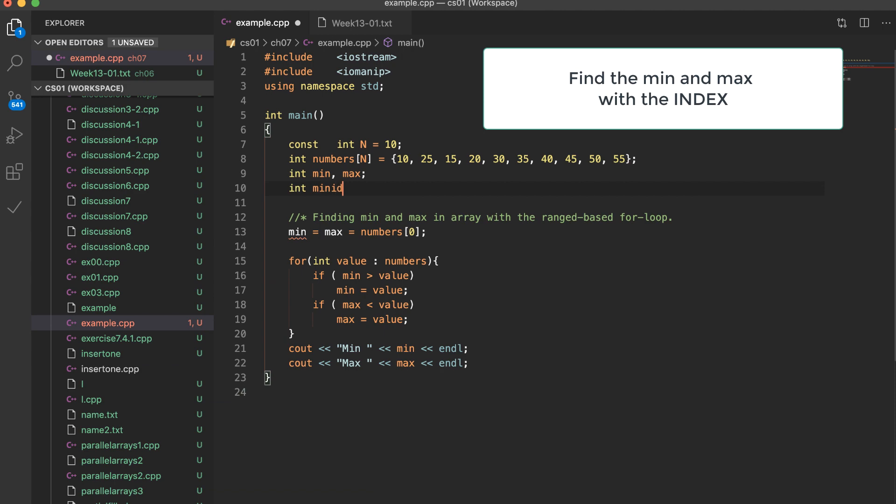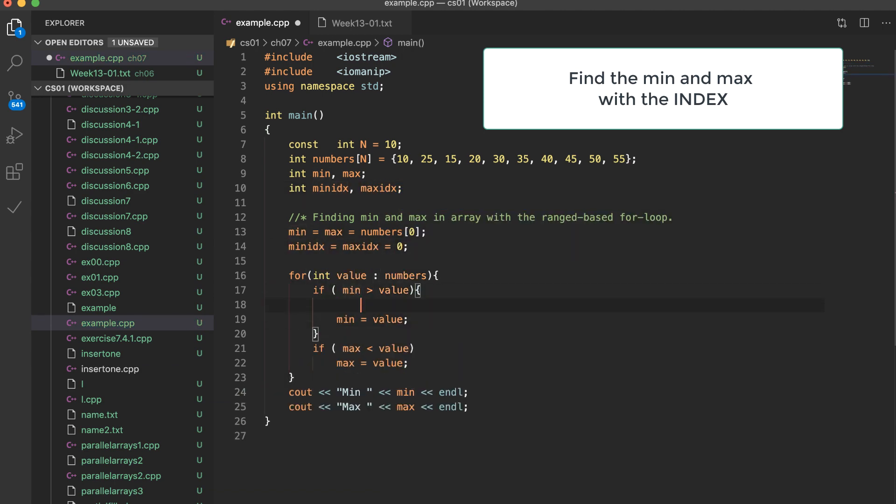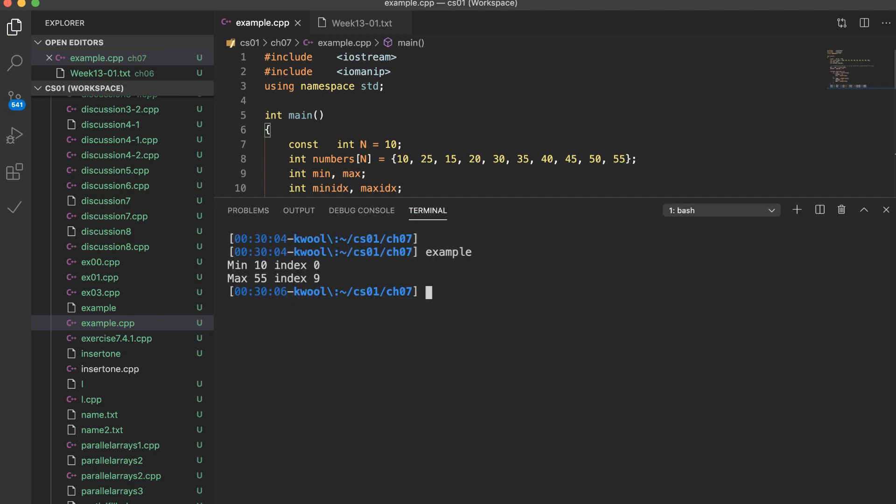I will declare two more variables for the index. Two variables are initialized as 0 for the first index. And when we change the min value, we also change the index. And also the range-based for loop should be transformed to the original for loop structures. And now we can find the min and max value with the index number. And here is the result of this program.